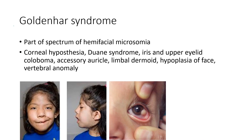Next is Goldenhar syndrome. It is part of the spectrum of hemifacial microsomia. The features include corneal hypoesthesia, Duane syndrome, iris and upper lid coloboma, accessory auricle, limbal dermoid, hypoplasia of the face, and vertebral anomaly. Clinical images show facial hypoplasia and limbal dermoid.